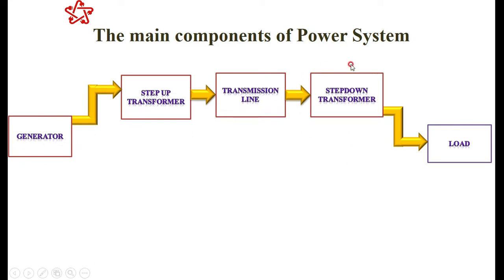At the step-down level, once the voltage reaches the load centers, it is stepped down from around 34.5 kV to 138 kV. Then 34.5 kV can be further reduced to popular voltages — 433 V three-phase and 230 V single-phase. These are the three main components of the power system seen in the overall power system.